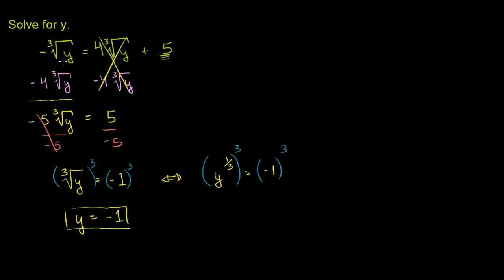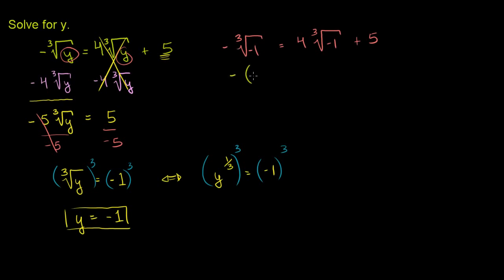Now let's make sure that it actually works. Let's go back to our original equation and put negative 1 in for y. We had the negative of the cube root of negative 1 has to equal 4 times the cube root of negative 1 plus 5. The cube root of negative 1 is negative 1, so this becomes the negative of negative 1 equals 4 times negative 1 plus 5. That gives us 1 equals negative 4 plus 5, which is 1. This is true, so this is our solution.